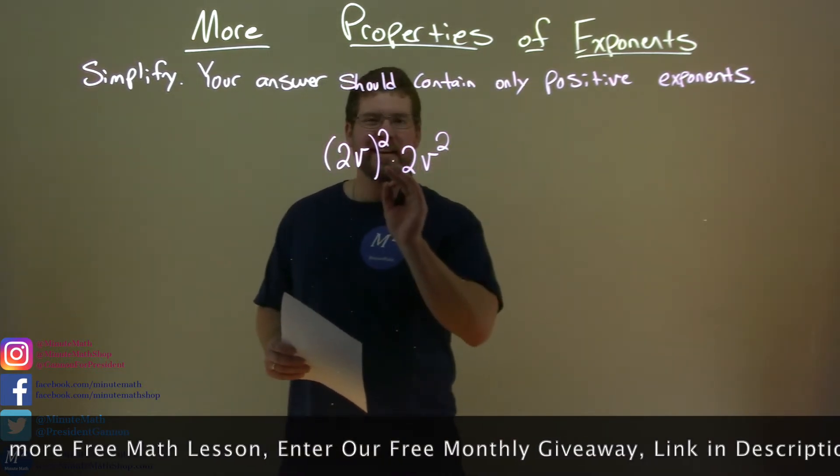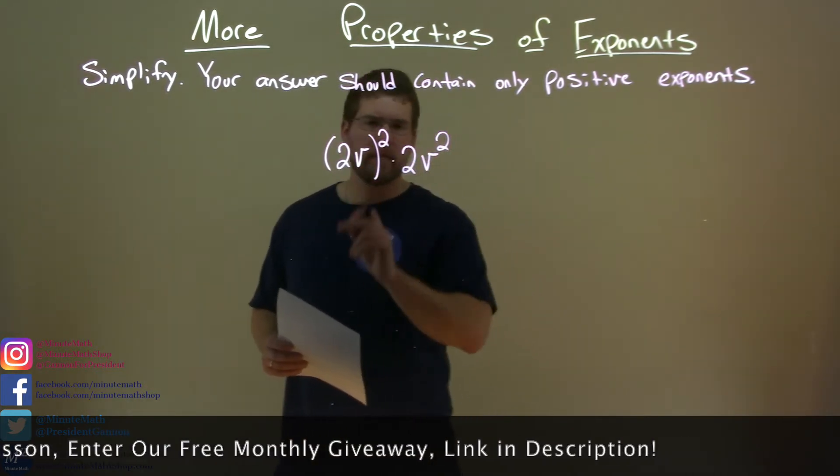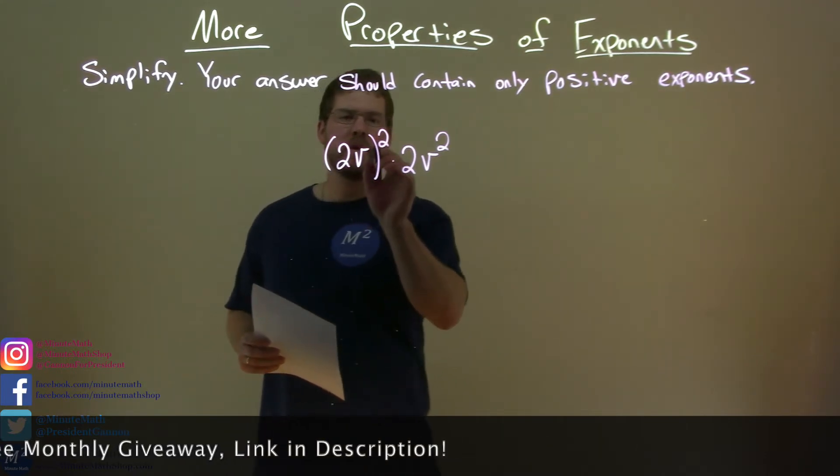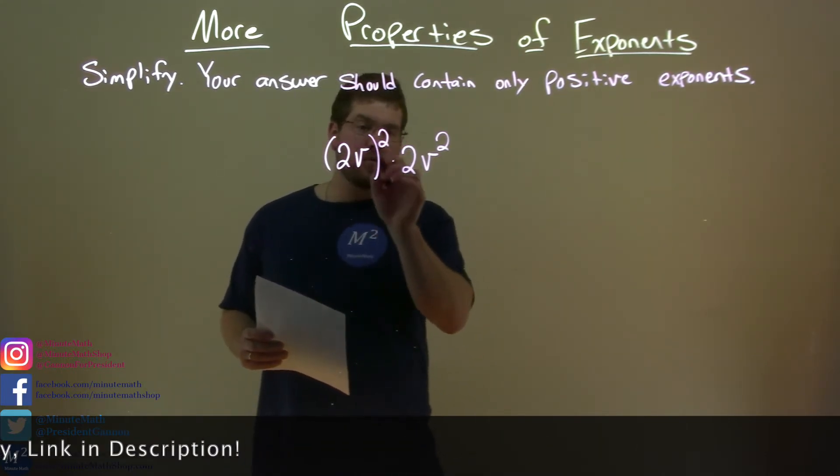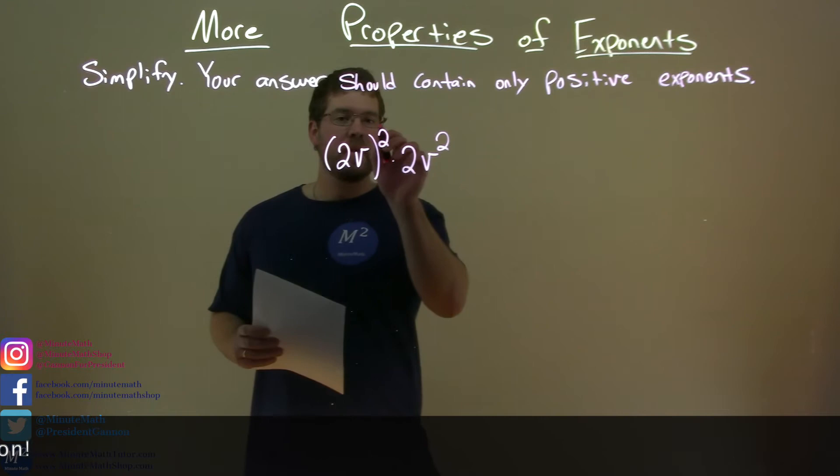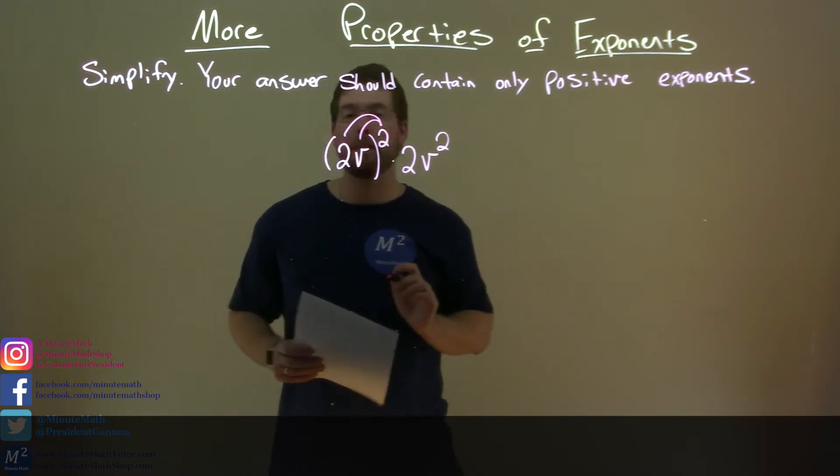Each one of these parts does something a little different. Let's deal with the first part here. 2v squared, or the squared part is outside the parentheses, that means we have to apply it to both parts.